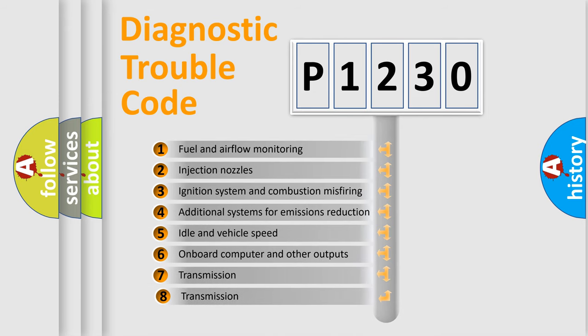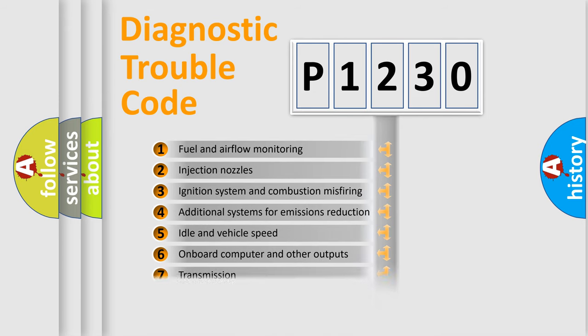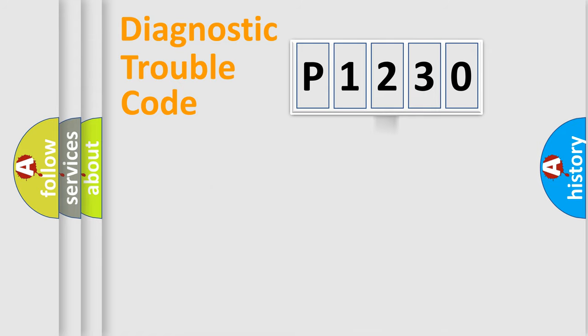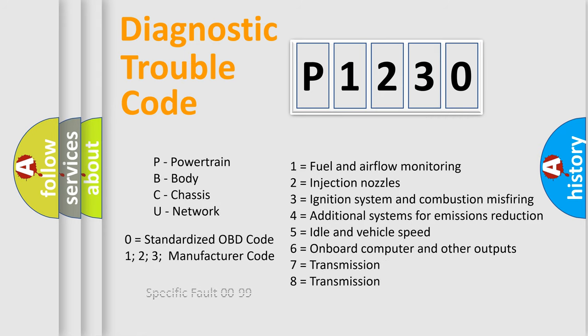The third character specifies a subset of errors. The distribution shown is valid only for the standardized DTC code. Only the last two characters define the specific fault of the group. Let's not forget that such a division is valid only if the second character code is expressed by the number zero.